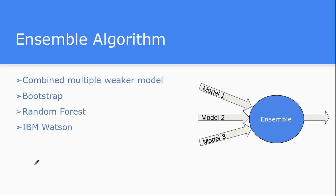Now let's look at another family — ensemble algorithms. This ensemble algorithm is not a particular kind of algorithm. What this family does is work with a huge set of different algorithms. Each individual algorithm inside a machine learning system has its own pros and cons. There is a famous saying: there is no free lunch theorem in machine learning. That means if you apply a machine learning algorithm on some data and it works fine, the same algorithm won't work on some other kind of data. For that data, you need to apply a different algorithm. There is no general rule that one particular algorithm will work on all different kinds of data.